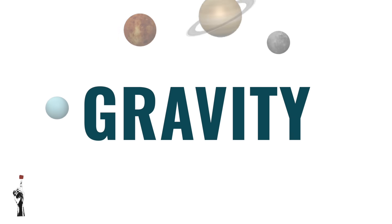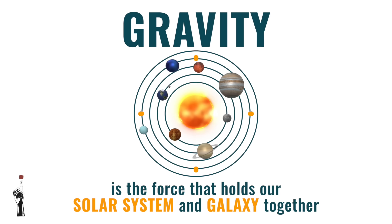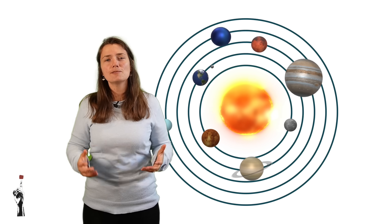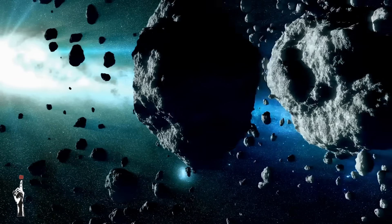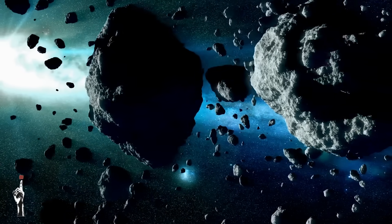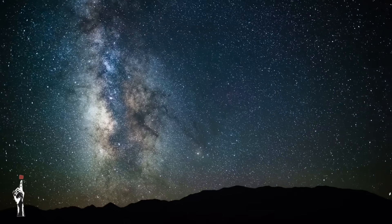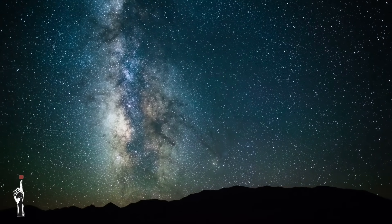What keeps all these planets orbiting the Sun and not floating away into space? That's where gravity comes in. Gravity is a force that pulls everything towards the center of our solar system — the Sun. It keeps the planets, the moons, and even the rocks floating in space in a predictable orbit. Beyond the planets there are many other fascinating objects in our solar system.